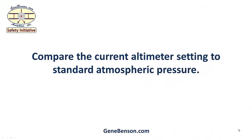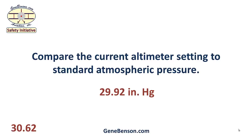Compare the current altimeter setting to standard atmospheric pressure. Recall that standard atmospheric pressure is 29.92 inches of mercury. Let's say that the altimeter setting is 30.62.